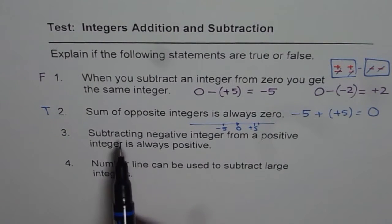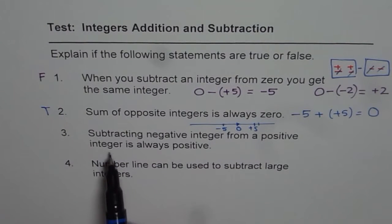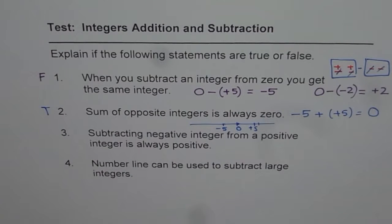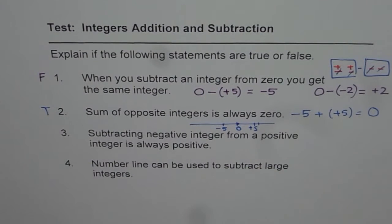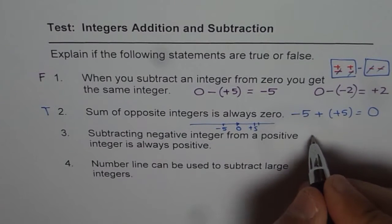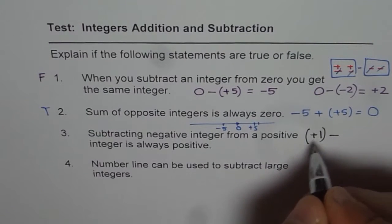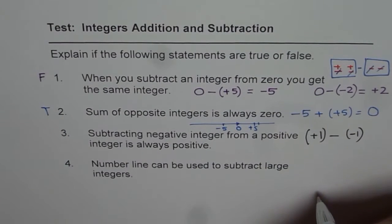The next one is, subtracting negative integer from a positive integer is always positive. Let's try to figure out. Subtracting negative integer from a positive integer. That is to say, we have a positive integer. Let us say positive 1. And from this, subtracting negative integer, let us say negative integer is negative 1. Then what do we get?